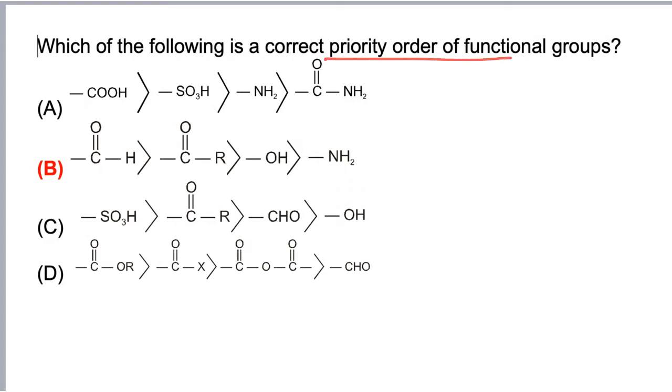If we take option A, this is not correct because COOH has higher priority than SO3H, and SO3H has higher priority than NH2, but here amide has higher priority than NH2. So this is not the correct option.